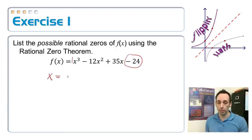So writing those out in order, x could possibly be equal to plus or minus 1, 2, 3, 4, 6, 8, 12, and then finally 24.